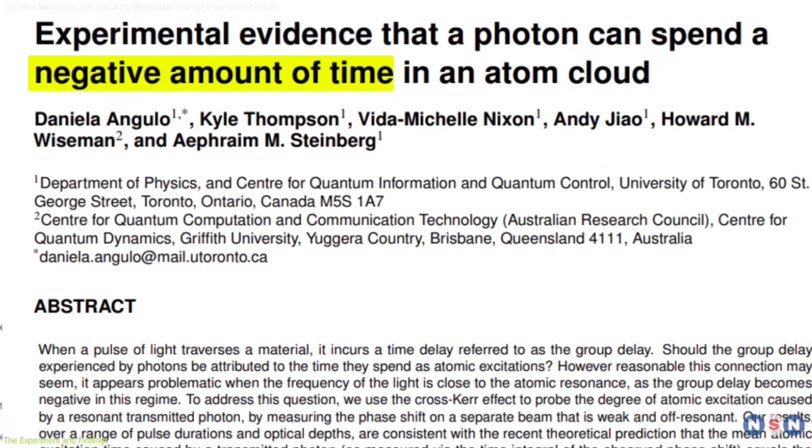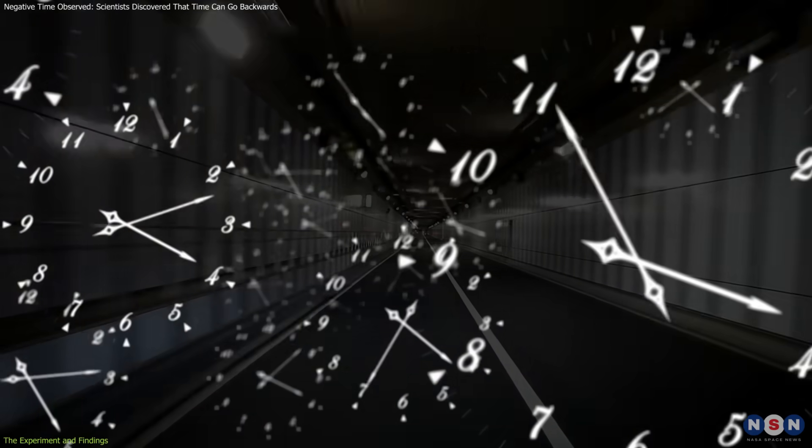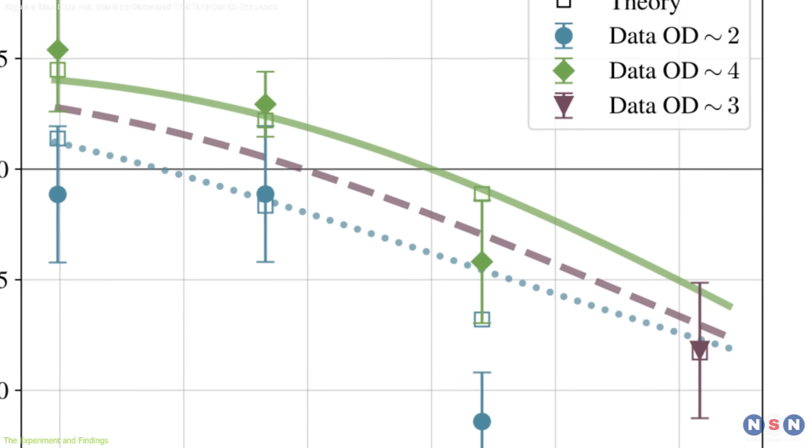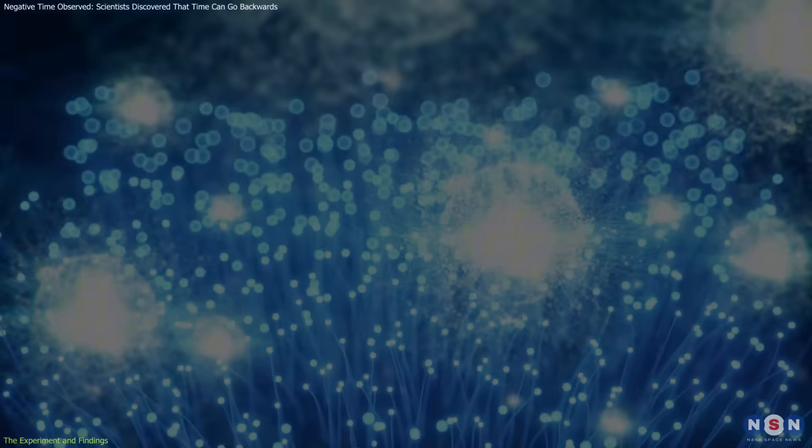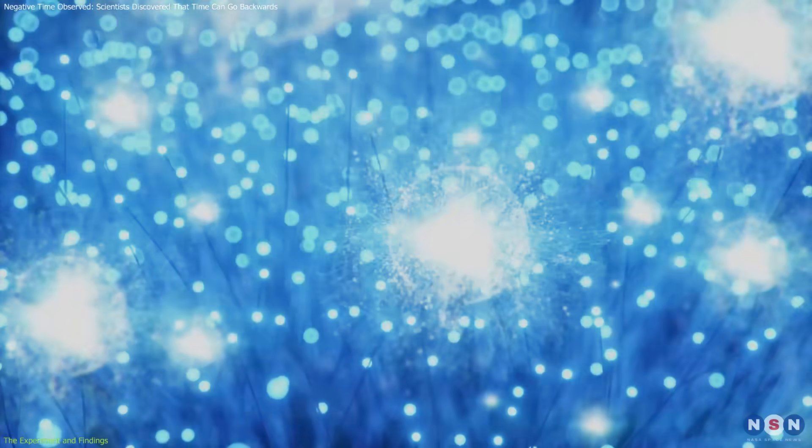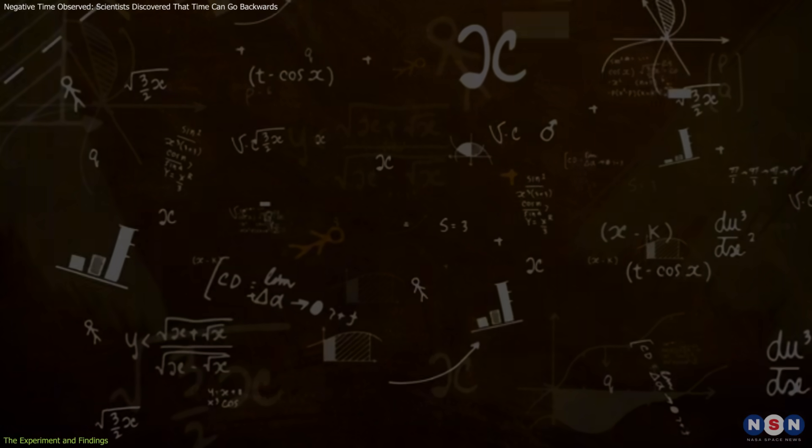Let's use an analogy to grasp this. Imagine cars entering a tunnel at noon, but the first cars emerge at 11:59 AM. This may seem impossible in our everyday understanding of time, but it accurately represents what the researchers observed with photons. The photons appeared to exit the interaction before they entered, revealing a temporal behavior that challenges classical physics.